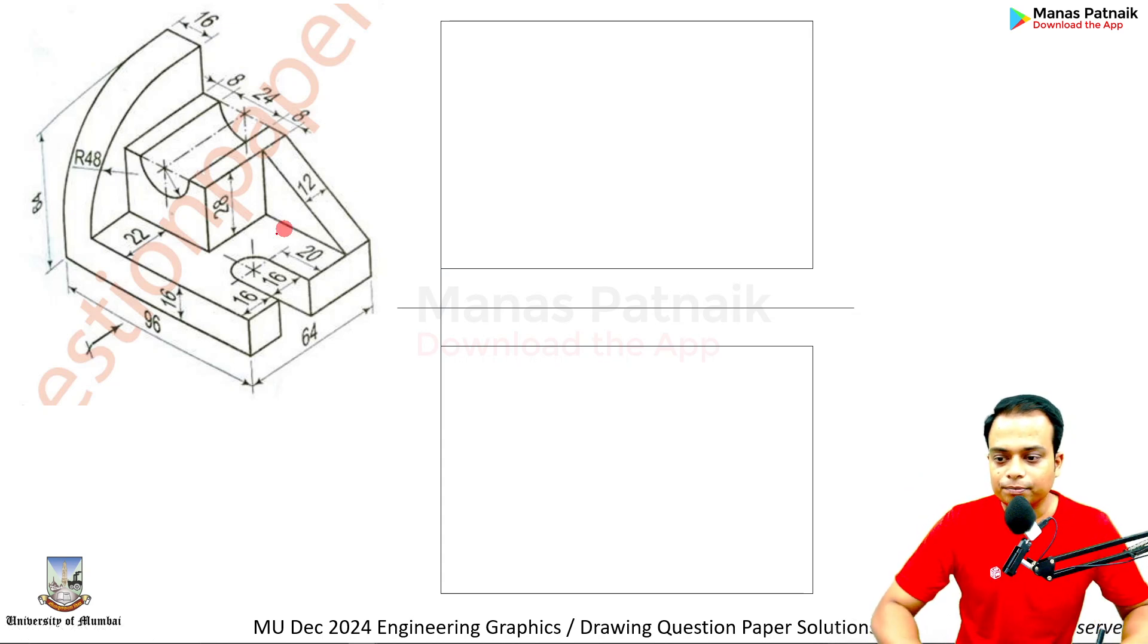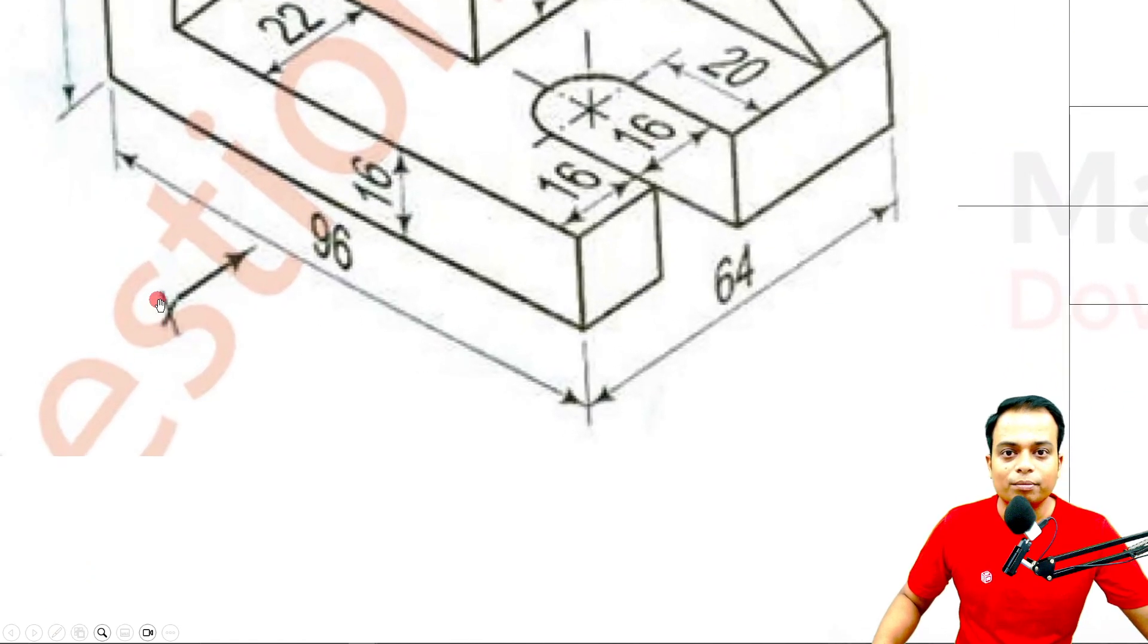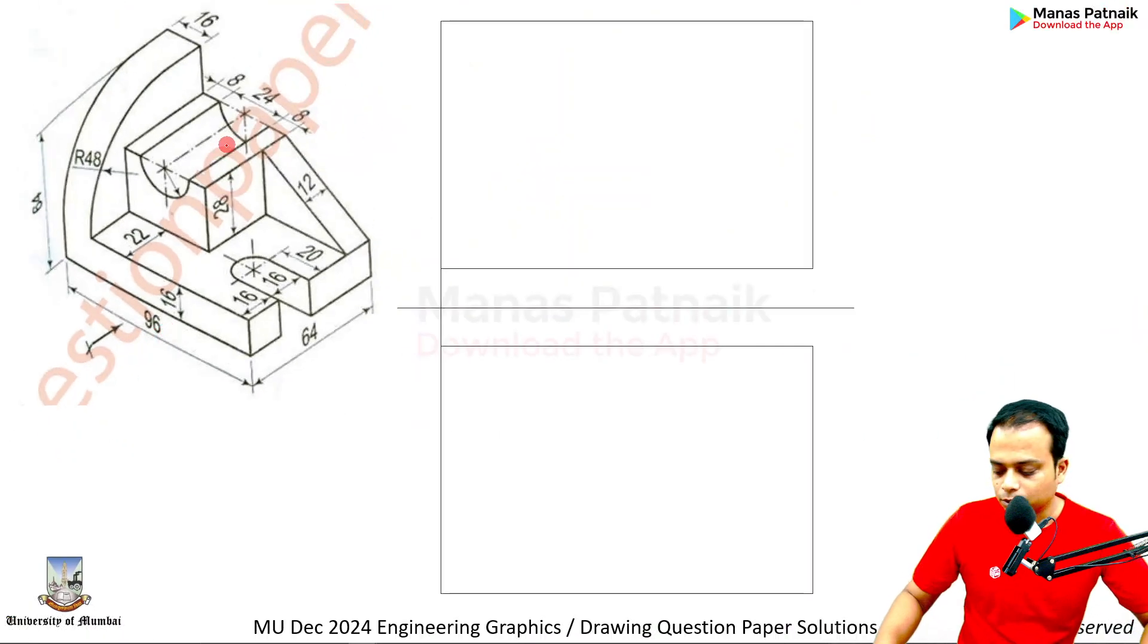What is the next step? It has been asked to create the front view when viewing from X, from over here. The easiest way to approach this question is to start by creating the front view. In the front view, you're going to see this—please observe the yellow portion I'm marking. This is what you'll see.